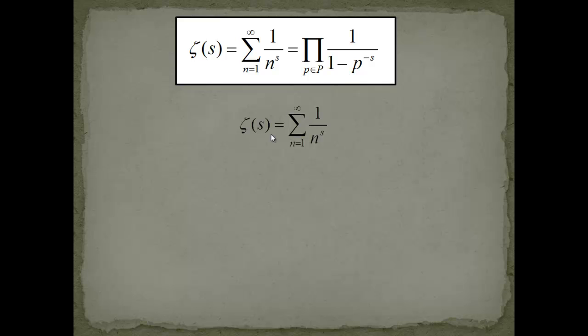We want to first introduce a step in which we want to take this definition of the zeta function and divide this by 1 over 2 to the s. What will happen then is we can take the 2 to the s into the sum and then you have 1 over 2 multiplied with n to the s. This is what we are doing.